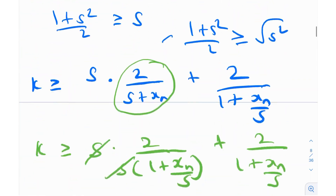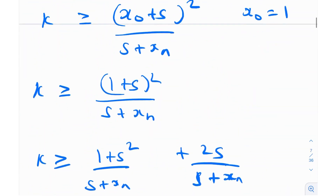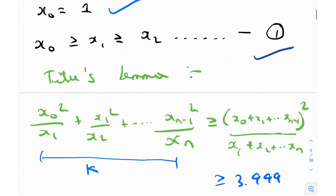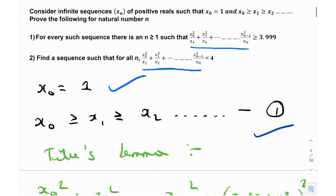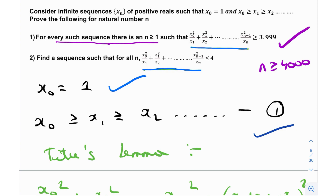So what we've done is proved part number 1: for all n ≥ 4000, this result holds true. For every such sequence, there is an n ≥ 1 satisfying the condition — yes, and we've proved it. Part 1 is complete.